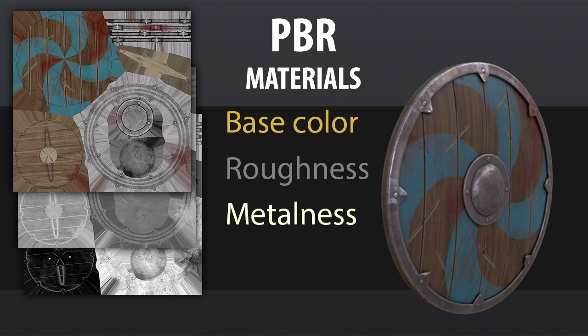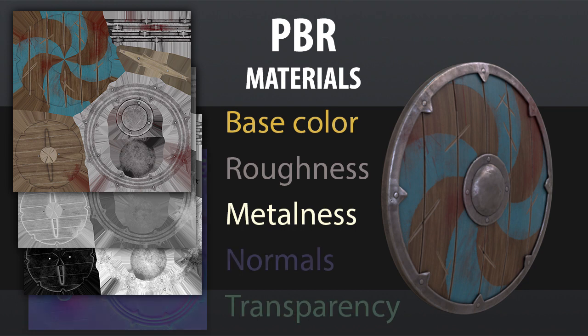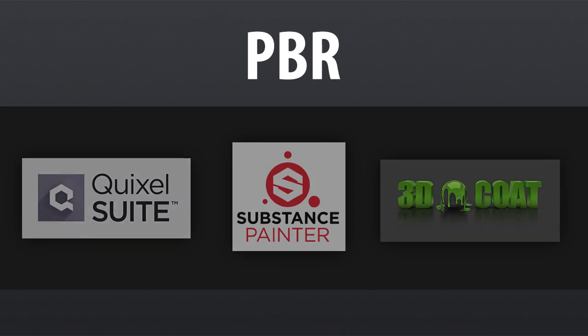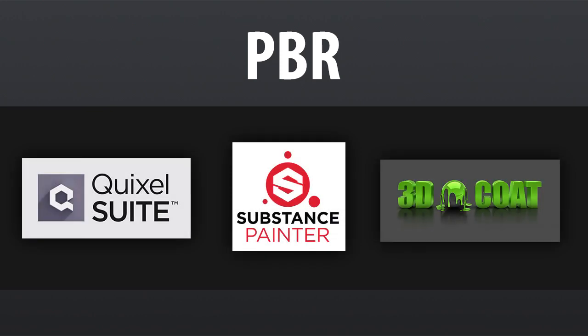Those are the three main concepts of the PBR workflow with metalness. In addition, there are also other maps used in materials, like the normal map that determines the surface relief, and the alpha map that determines transparency, among others. Currently, most 3D programs include this method, but there are also specialized programs for creating textures, like Quixel Suite, Substance Painter, and 3D Coat.